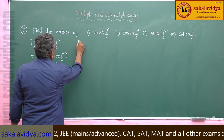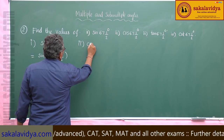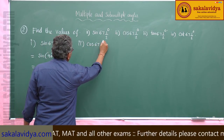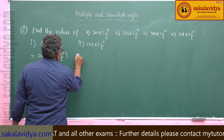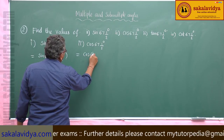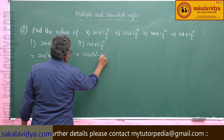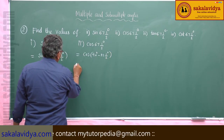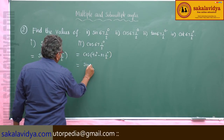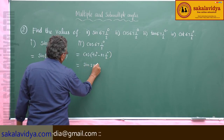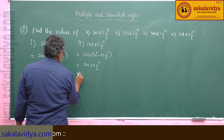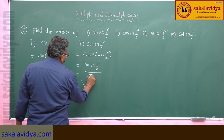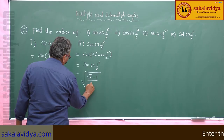Second problem: cos 67 and a half degrees. This can be written as cos(90 degrees minus 22 and a half degrees). Since cos(90 minus θ) = sin θ, this equals sin 22 and a half degrees, which is root over (√2 minus 1) by 2√2.